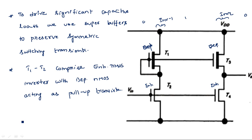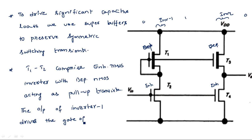T1 and T2 form the NMOS inverter with the depletion mode NMOS acting as a pull-up device. The output of inverter 1 drives the gate of T3. The output of the first inverter is given to the input of the second inverter — it drives the gate of transistor T3. The original input drives the gate of T4, and the output of the first stage is connected directly to the input of transistor T4.